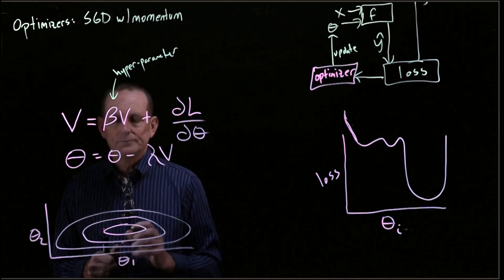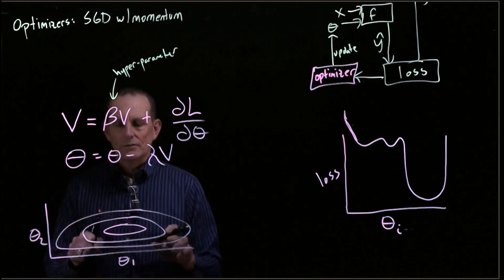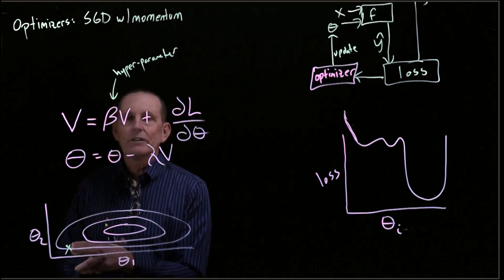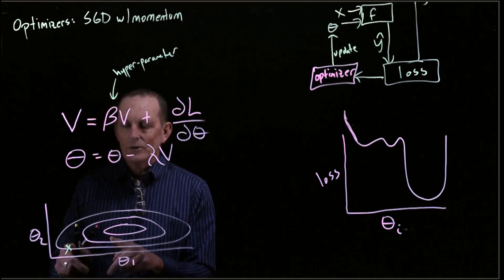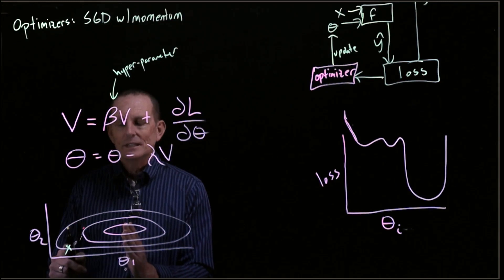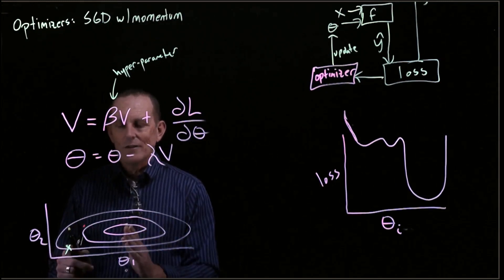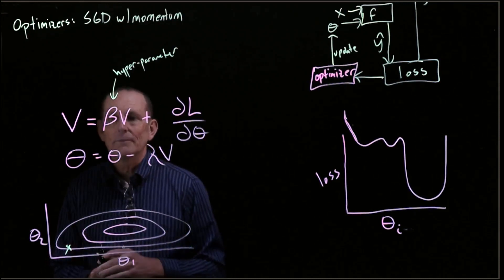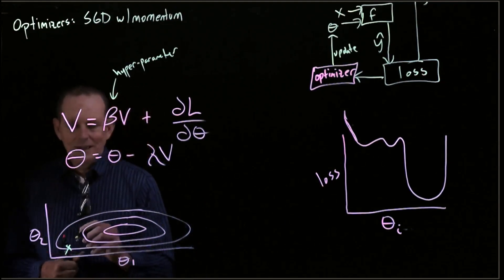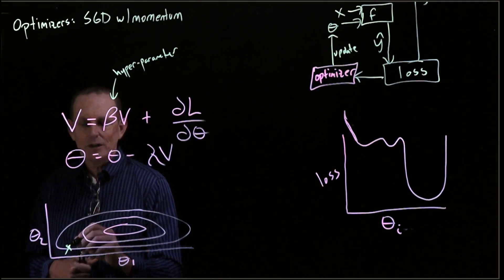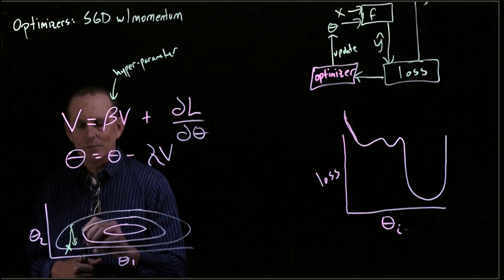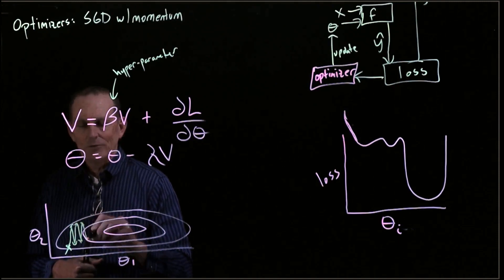Let's look at a contour map of theta 1 and theta 2. Each ellipse is a constant loss. At some particular value of theta 1 and theta 2, the gradient in the horizontal direction is less than the gradient in the vertical direction — the distance to travel horizontally is much bigger than vertically. We have a larger vertical gradient than horizontal. What we want to avoid is taking large steps vertically and small steps horizontally, oscillating back and forth like that.